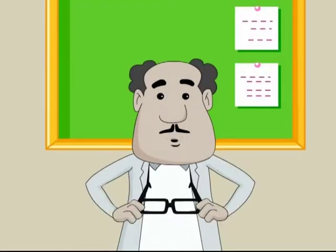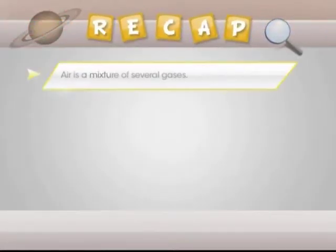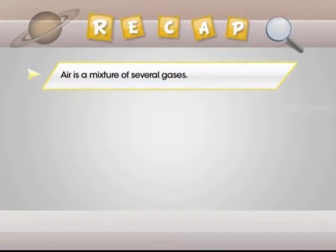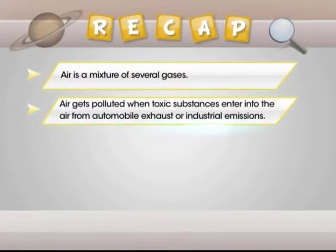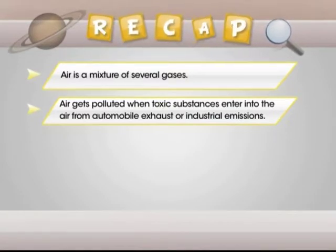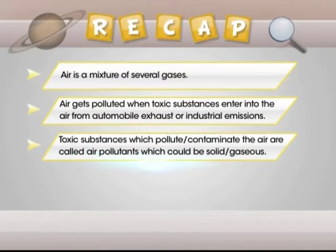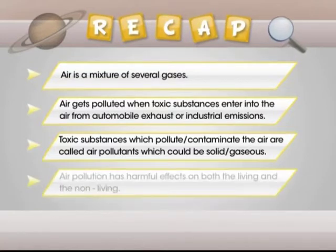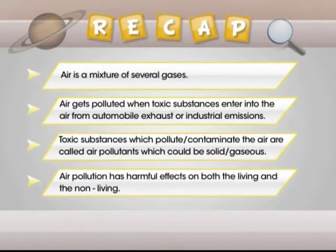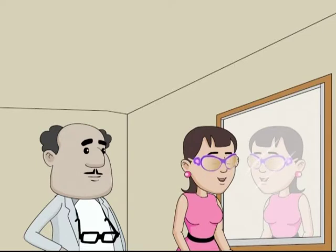Now is the time to take a memory jog. Let's quickly revise what we have learned today about air pollution. Air is a mixture of several gases. Air gets polluted when toxic substances enter into the air from automobile exhaust or industrial emissions. The toxic substances which pollute or contaminate the air are called air pollutants, which could be solid or gaseous in nature. Air pollution has harmful effects on both the living and the non-living.